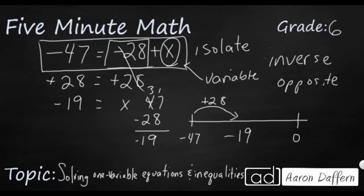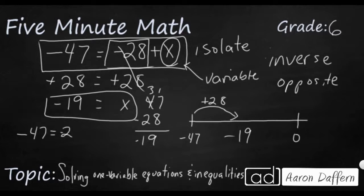If we're not sure about whether this is our answer, you can always plug negative 19 back into the original equation. Does negative 47 equal negative 28 plus negative 19? Adding negative 28 and negative 19 gives us negative 47. Correct!